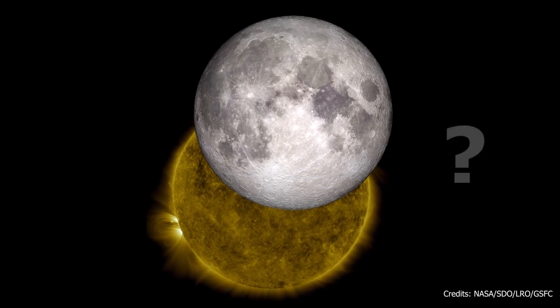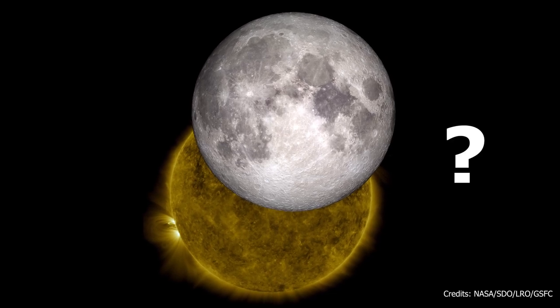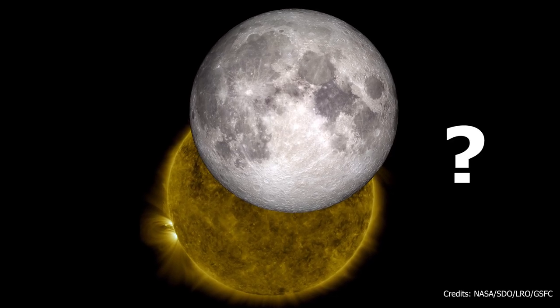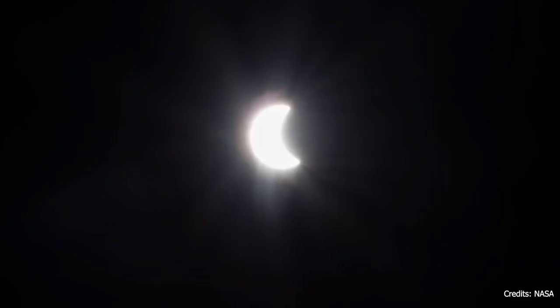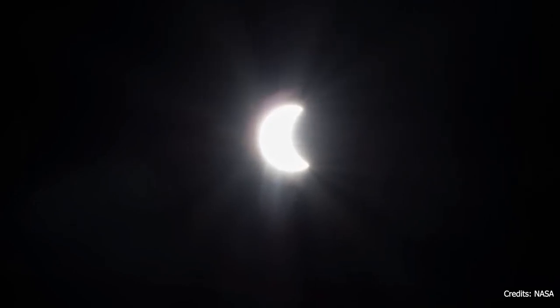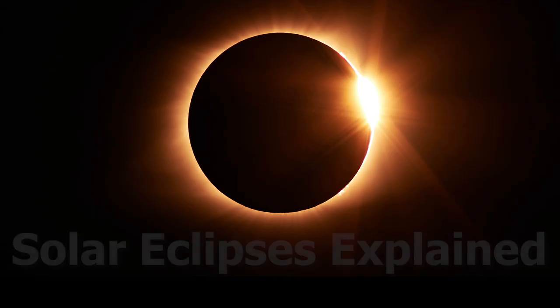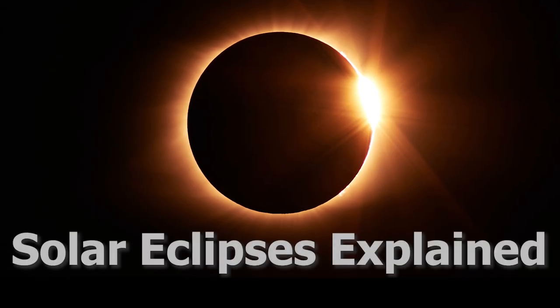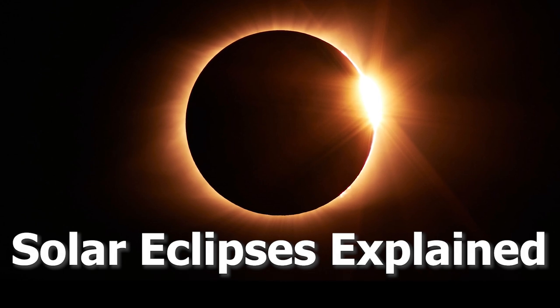Why do the Sun and the Moon have the same size when viewed from Earth? How do our solar eclipses happen? What types of solar eclipses are there? In this video, we'll briefly explain the solar eclipse phenomenon.